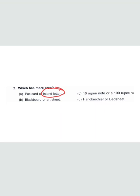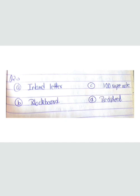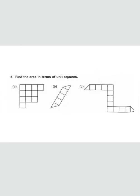For the other comparisons: blackboard or art sheet — obviously blackboard has more area. 10 rupee note or 100 rupee note — obviously 100 rupee note. Handkerchief or bed sheet — obviously bed sheet. I showed the picture of postcard and inland letter because you may not know them, but blackboard, rupee notes, handkerchief, and bed sheet you all know. The answers are: inland letter, blackboard, 100 rupee note, and bed sheet.